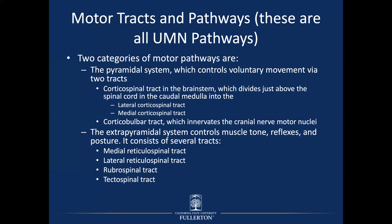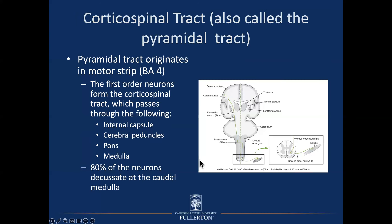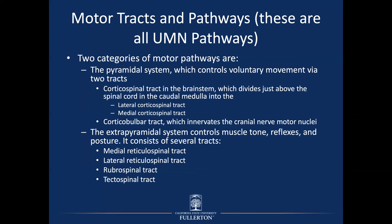The extrapyramidal system controls muscle tone, reflexes, and posture. It too has a point of origin in the motor strip, but it's more complex — it synapses with things in the brainstem and then sends down tracts with different names. There are basically four of them: the medial reticulospinal tract, the lateral reticulospinal tract, the rubrospinal, and the tectospinal. I'm only going to embellish on the medial and lateral reticulospinal tracts because they regulate muscle tone and spinal reflexes. For now, you just know the names and that they're extrapyramidal tracts.